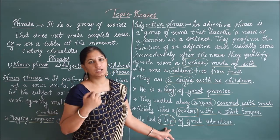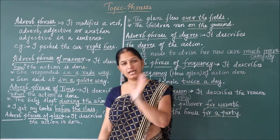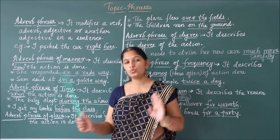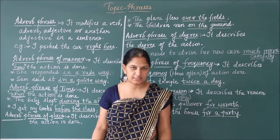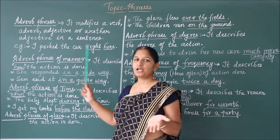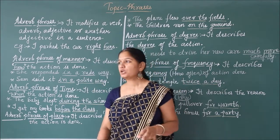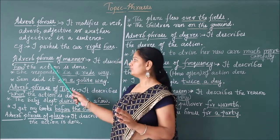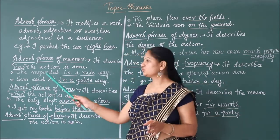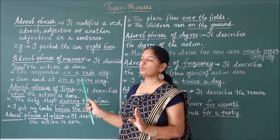Now let us move on to the next kind of phrase: adverb phrase. It modifies a verb, adjective, or another adverb in a sentence. Normally, adverb phrases answer the questions: why, how, where, when, how much, or for what reason. For example: 'I park the car right here.' Where did I park the car? Right here. So 'right here' becomes an adverb phrase. The first kind is adverb phrase of manner — it describes how the action is done. For example: 'She responded in a rude way.' How did she respond? In a rude way. So 'in a rude way' is an adverb phrase of manner.